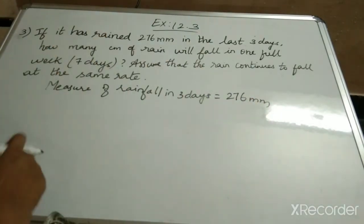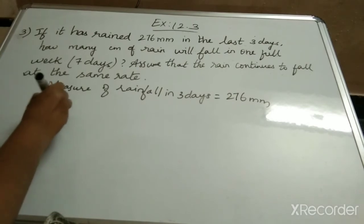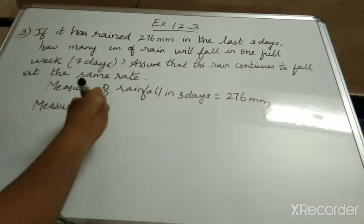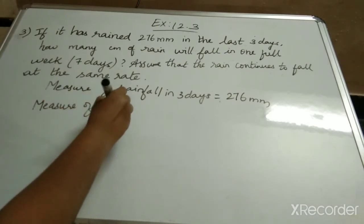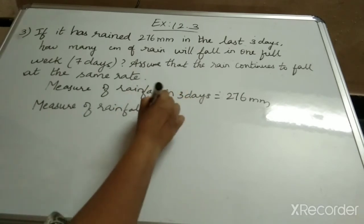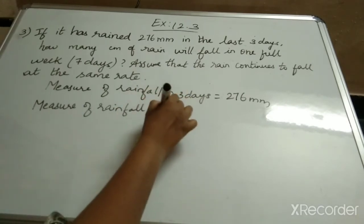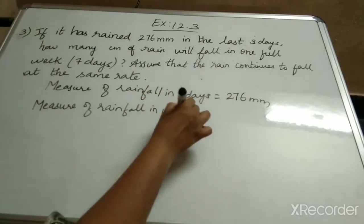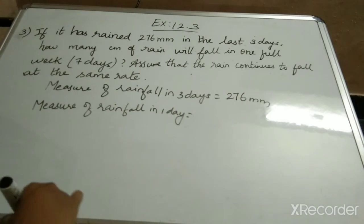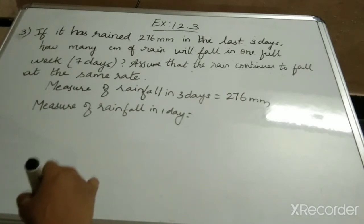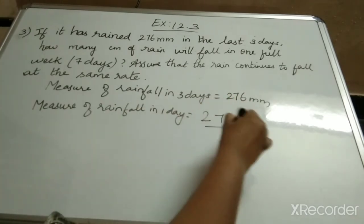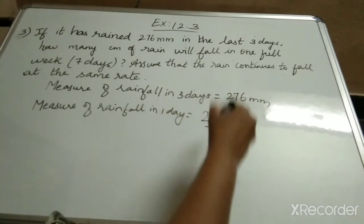Now the measure of rainfall in 1 day — how can we find for 1 day? We have to divide. So 276 divided by 3.